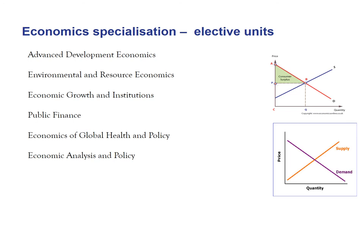The economic specialization also offers six elective units in different areas of economics focused on the public policy domain. Options include development economics, environmental economics, economic growth and the role of institutions, finance, global health, and economic analysis and policy — which covers topics like the economics of terrorism and labour economics. These units are taught by academics who specialize and research in these areas, so you'll learn about cutting-edge research applied to helping the economy.